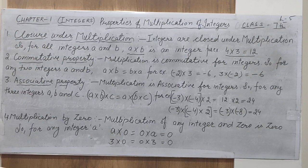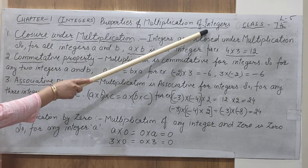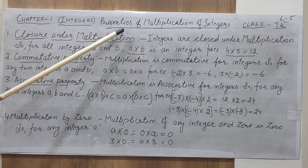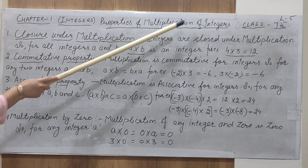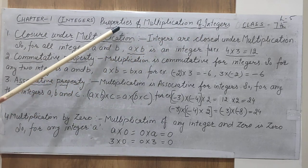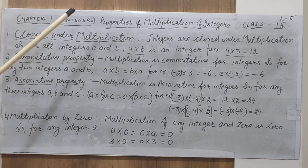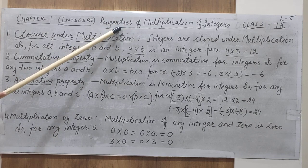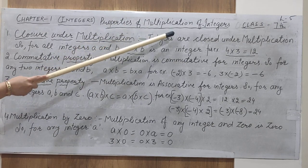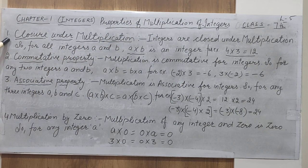Students, I think you understand how integers are multiplied — how positive integers are multiplied and how negative integers are multiplied. Now, let us move to the properties of multiplication of integers. Previously, we covered properties of addition and subtraction of integers.